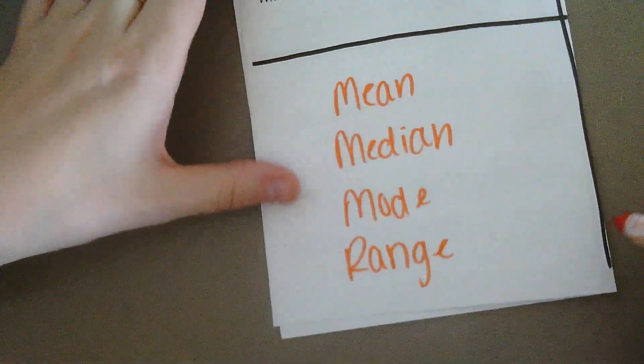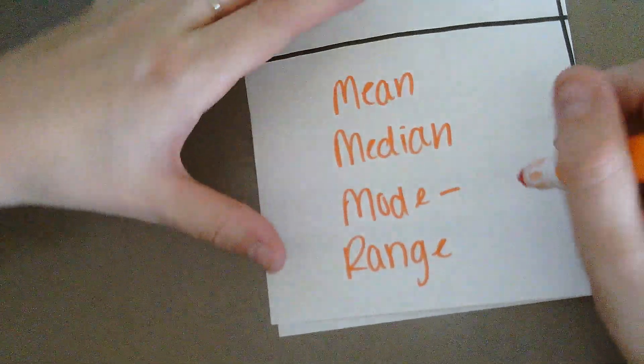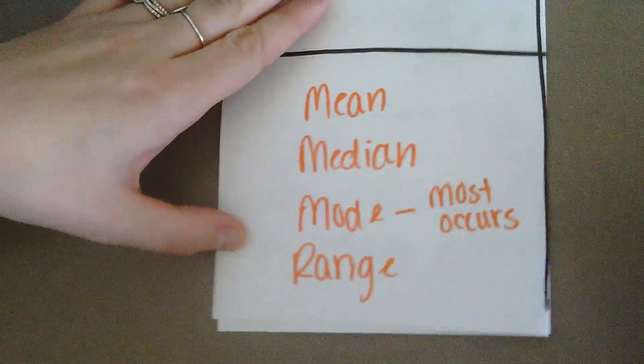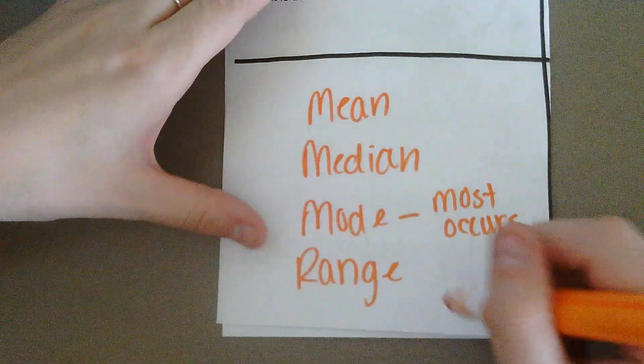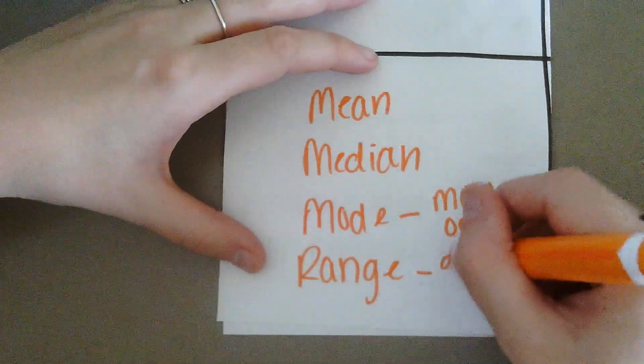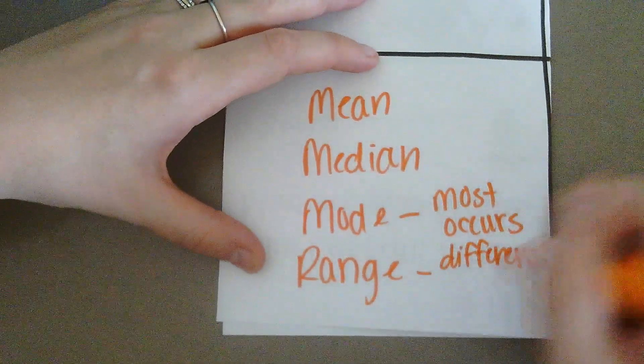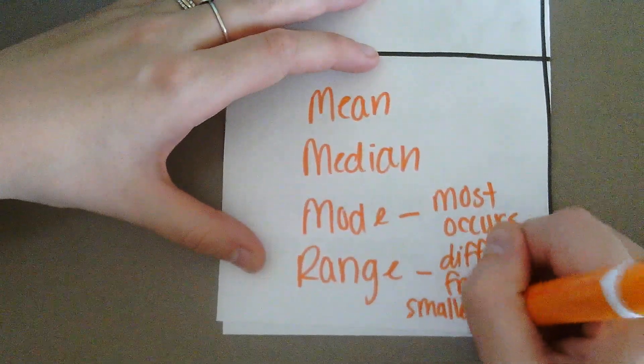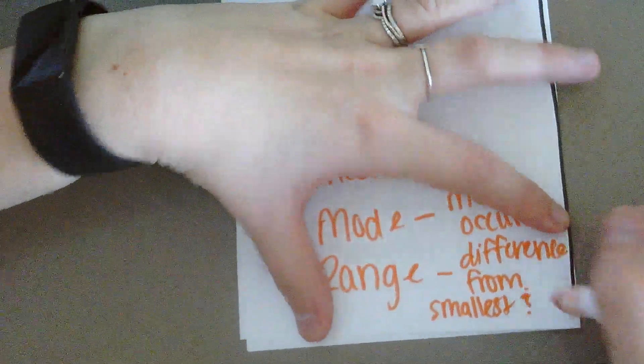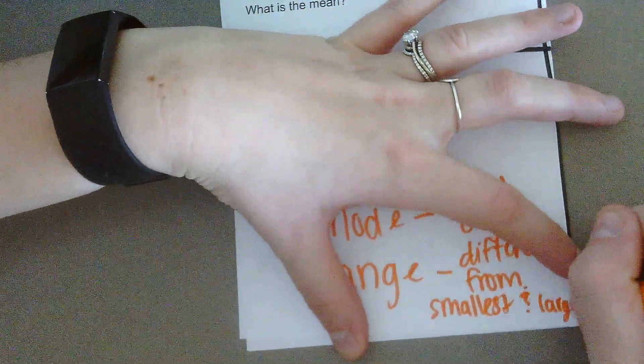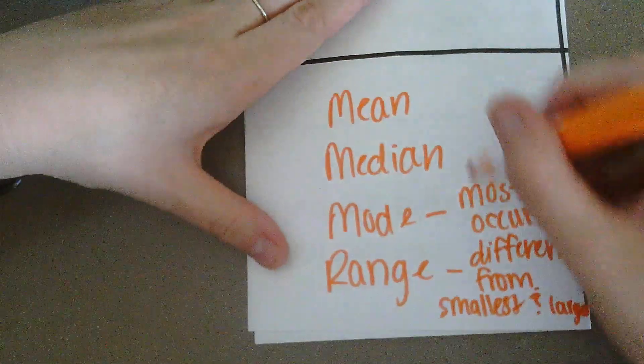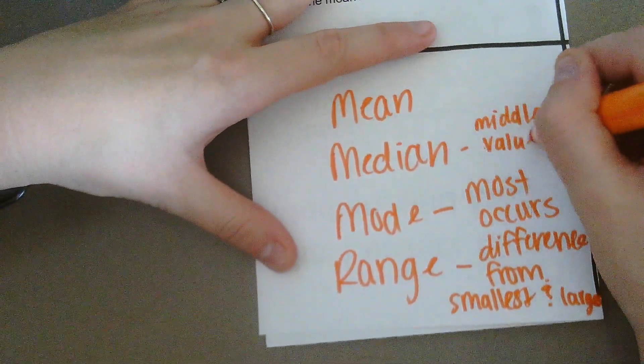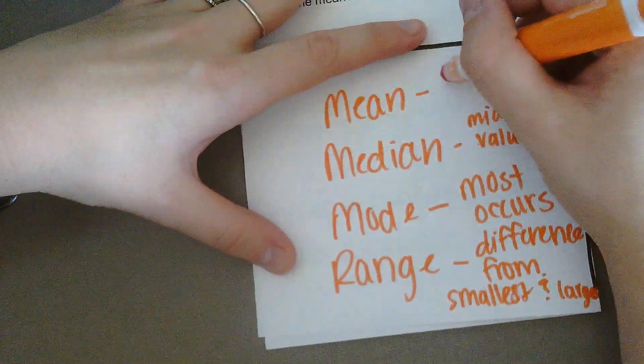So first, the mode is what we find to be the most occurring number, or what number is in the list the most. The range is the difference from the smallest and the largest numbers. The median is the middle number, the number that is directly in the middle, and our mean is our average.